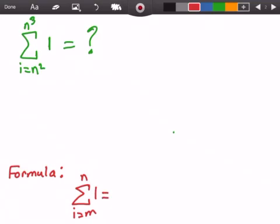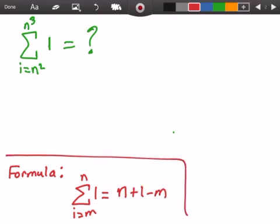So I'm going to get my eraser here and erase that question mark. What we're going to do is plug in the values into our formula. So we're going to plug in n cubed for n and we're going to plug in n squared for m.